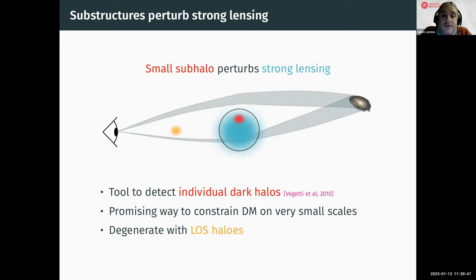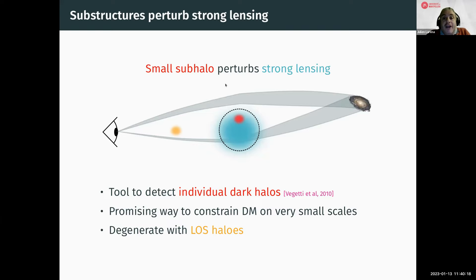The idea of using strong lensing to probe the distributions of dark matter structures is not new. It's been used for over a decade now to try and detect directly small sub-halos in the main strong lensing lens or along the line of sight — represented respectively in red and in yellow — by trying to fit the effect they might have on strong lensing images. This is a promising route to constrain dark matter on small scales, which can have important implications for dark matter models.